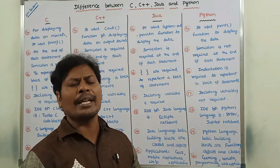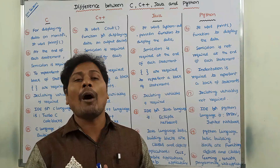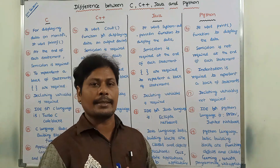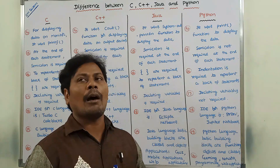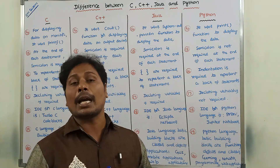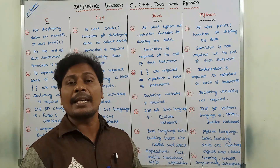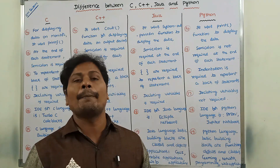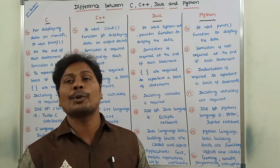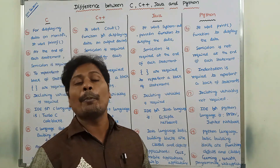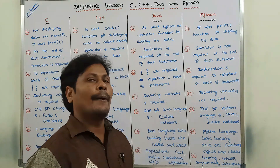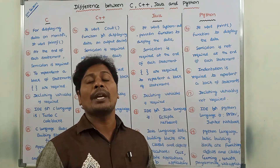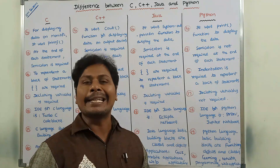In C language, to represent a block of statements we use curly braces. In C++ also we use curly braces to represent a block of statements. In Java language also, to represent a block of statements we use opening and closing curly braces. But in Python language, to represent a block of statements we use proper indentation.